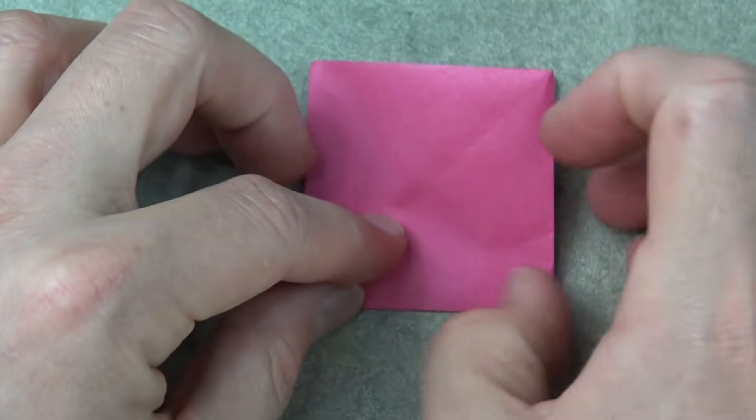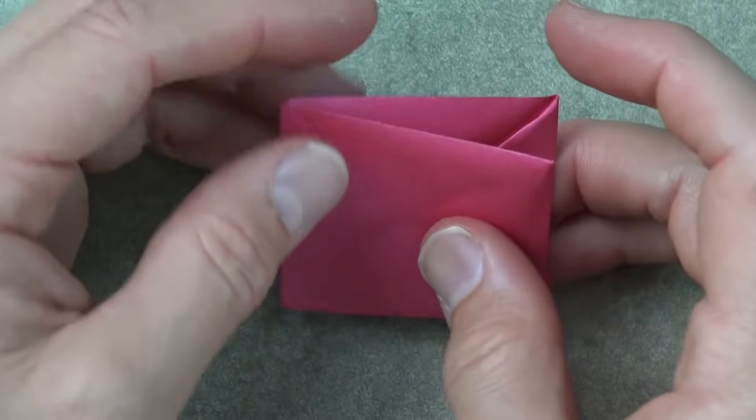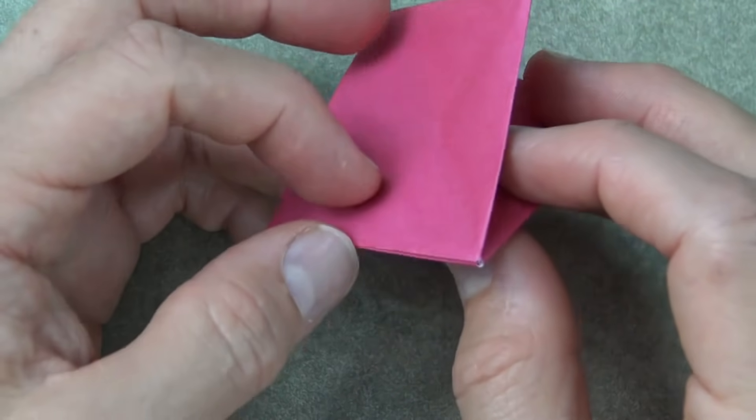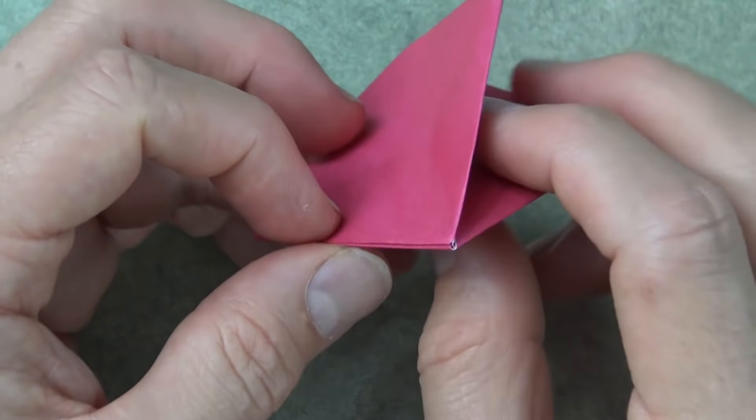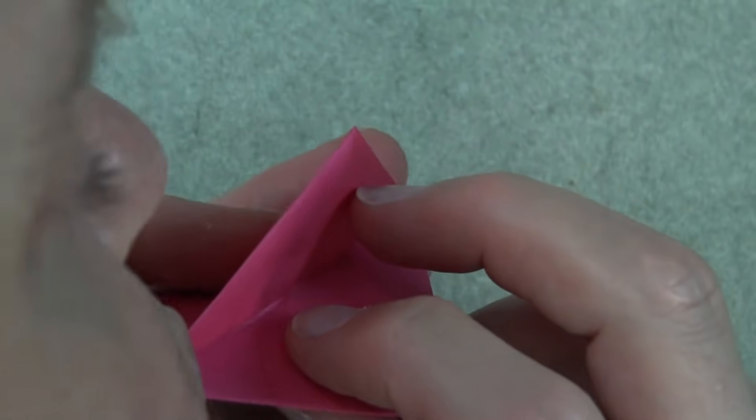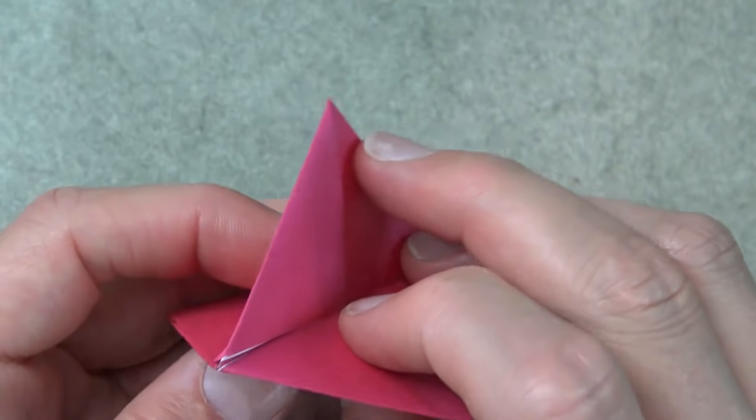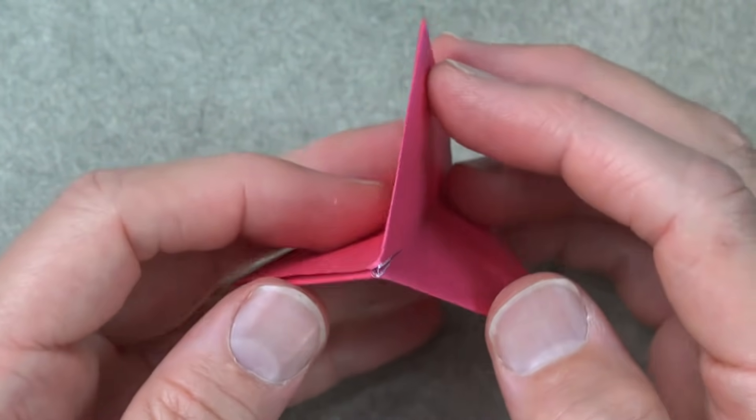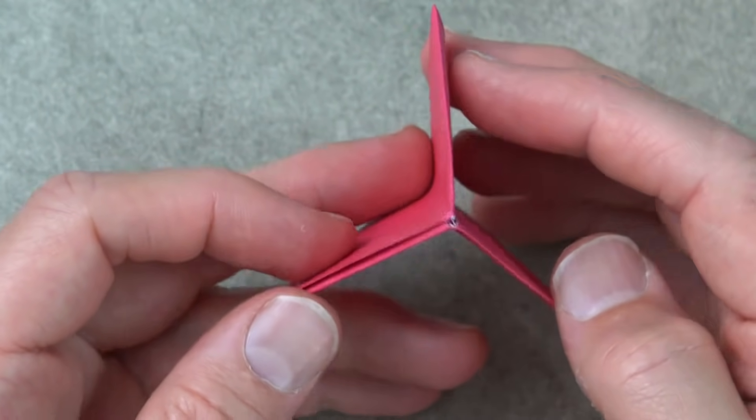Crease sharply. We are ready to blow it up. You can just blow it up from this point. You can also make sure that all three flaps go opposite directions, like a Mercedes line.